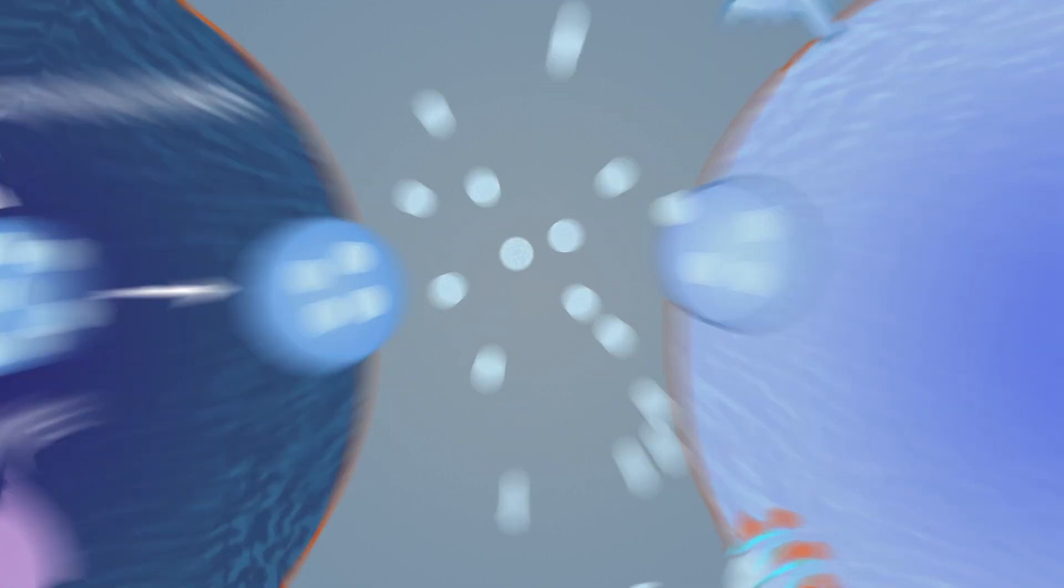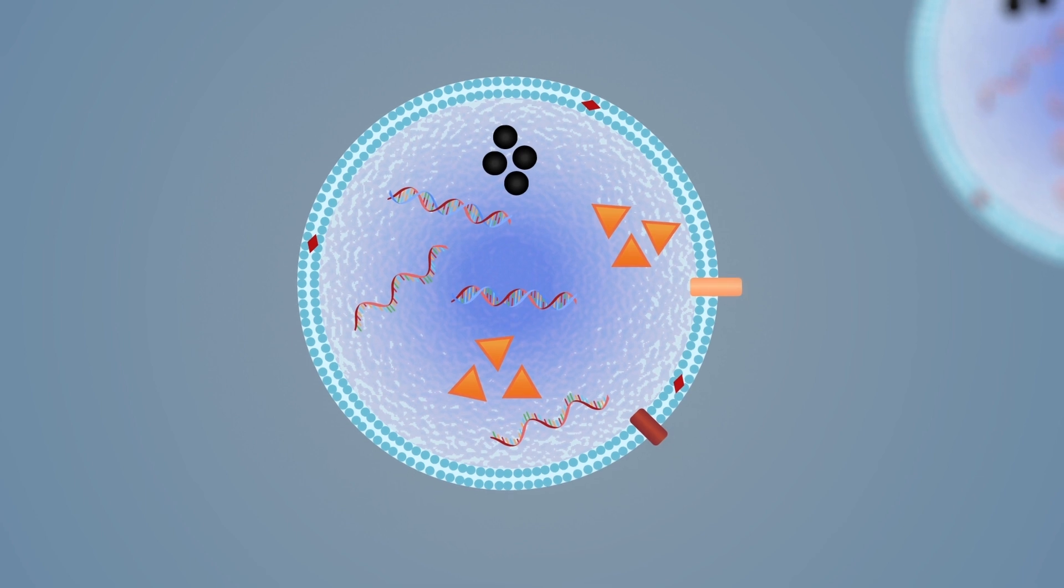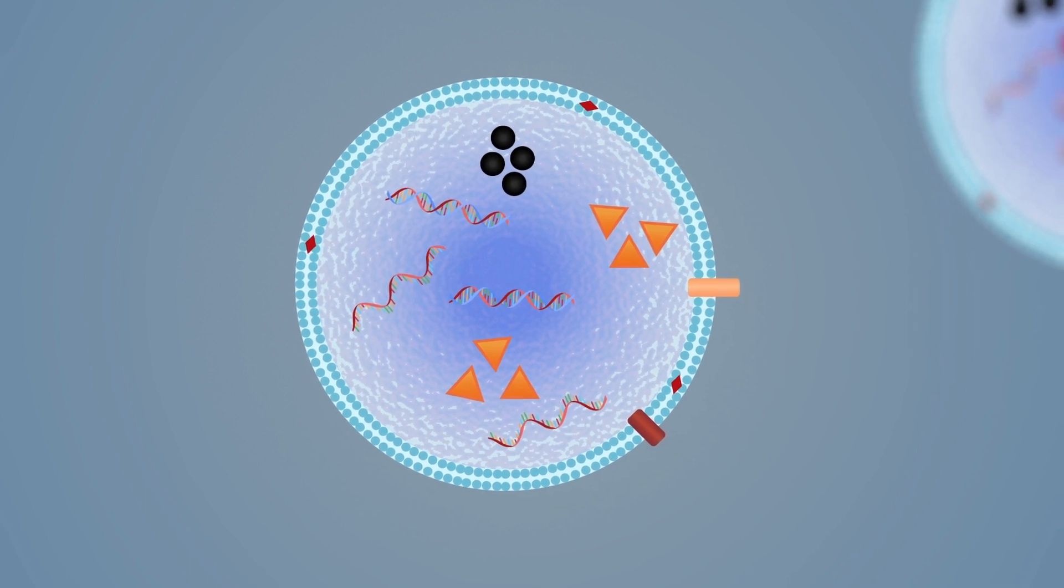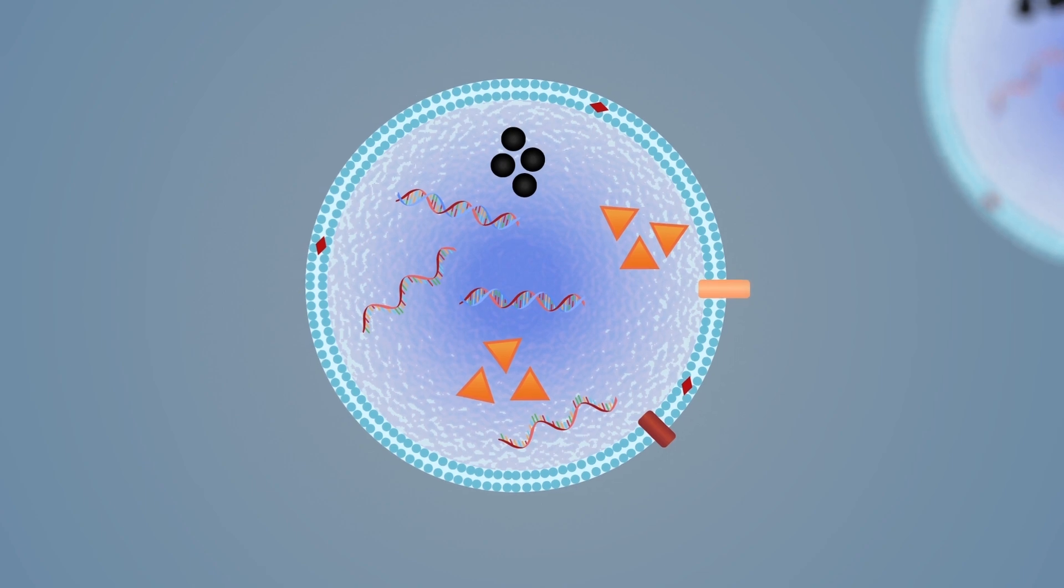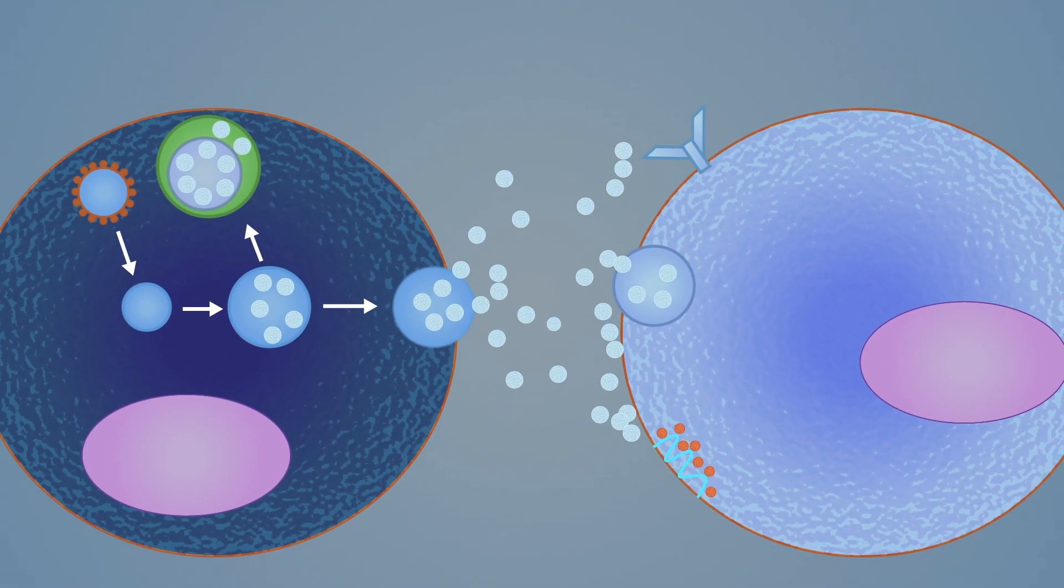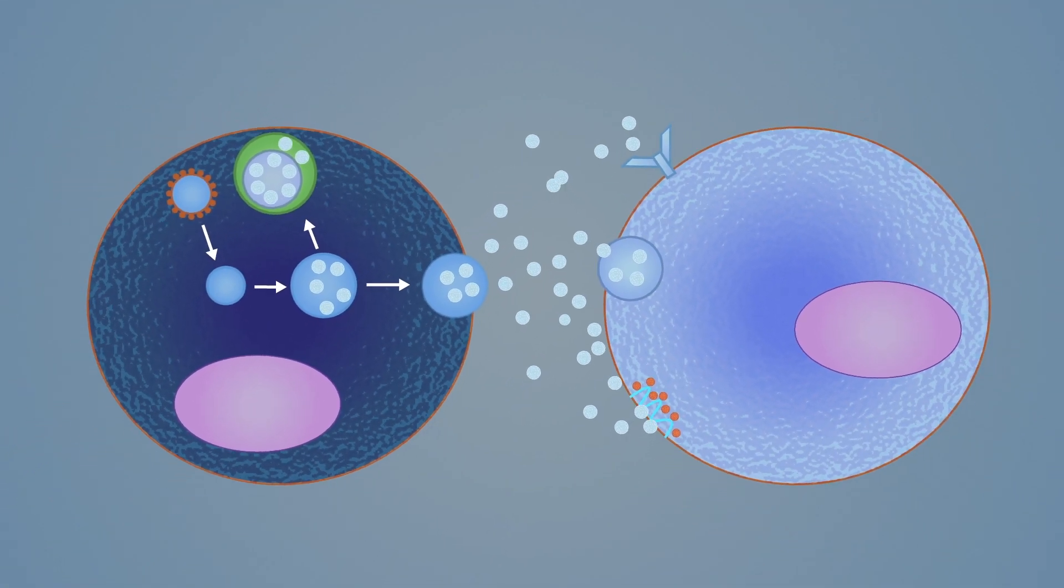Exosomes carry with them cargo, including proteins and nucleic acids, which they deliver to other cells, a bit like a message in a bottle. Once delivered, the cargo affects how the recipient cell behaves.